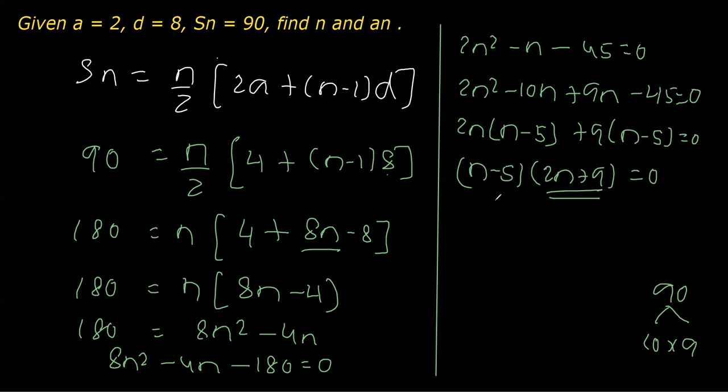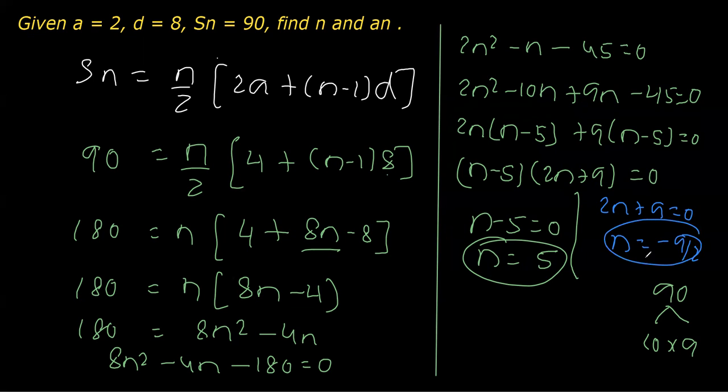Equating with 0, if I equate n - 5 with 0, we'll get n = 5. Equating 2n + 9 = 0, we get n = -9/2. As you know that n has to be a natural number, so we got n = 5.